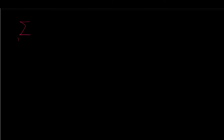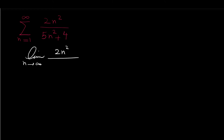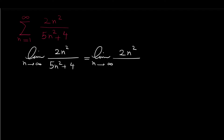Consider the series sigma n from 1 to infinity of 2n squared over 5n squared plus 4. If we want to use the divergence test to check if this series is convergent or divergent, we have to find this limit. The first method is to keep only the dominant terms in the numerator and denominator. In the numerator we have one term which is 2n squared.